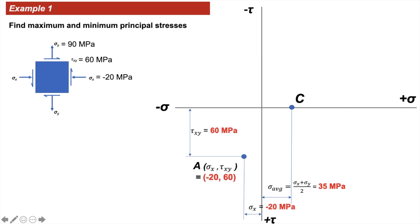Now find point A, which is sigma x comma tau xy. Sigma x is minus 20, so we move to the left of the origin, and tau xy is plus, so we move down from the sigma axis to locate point A.